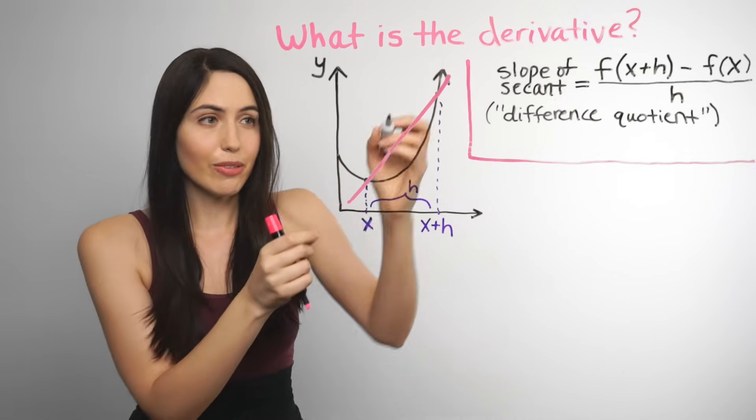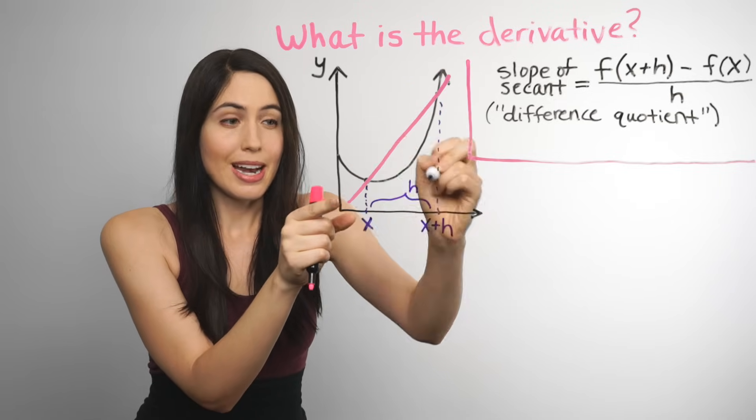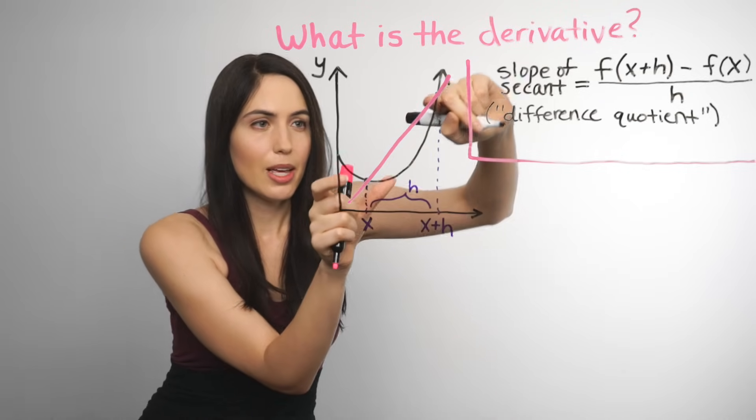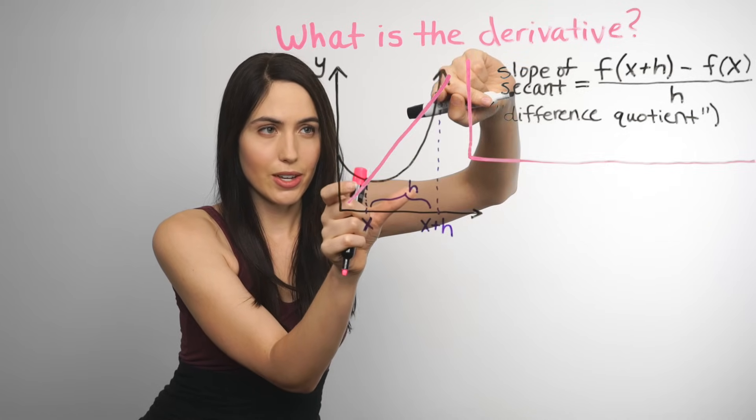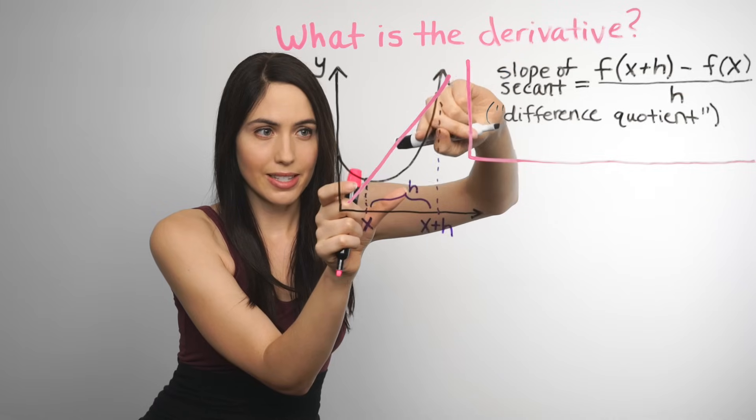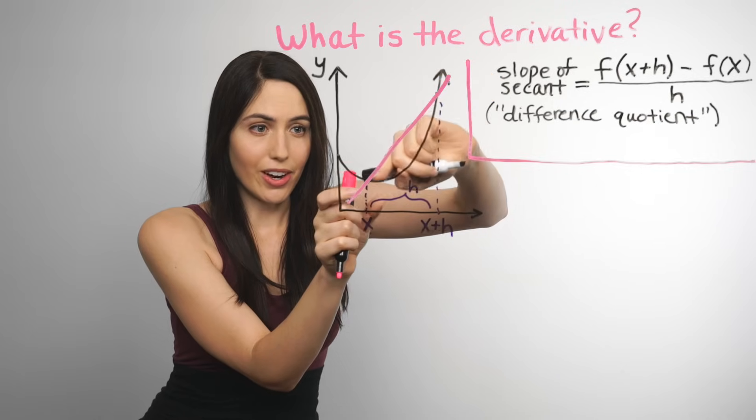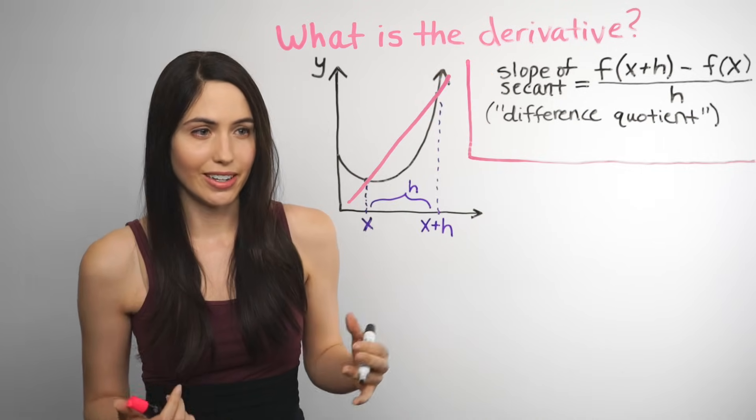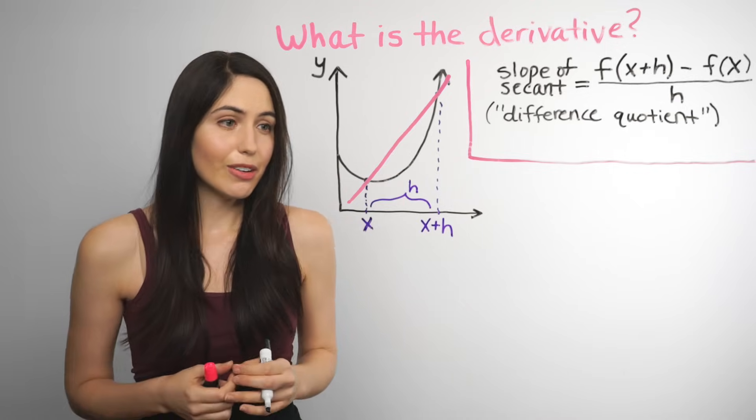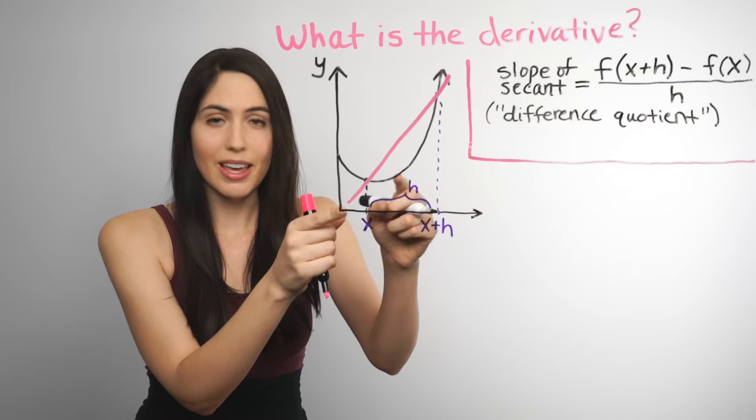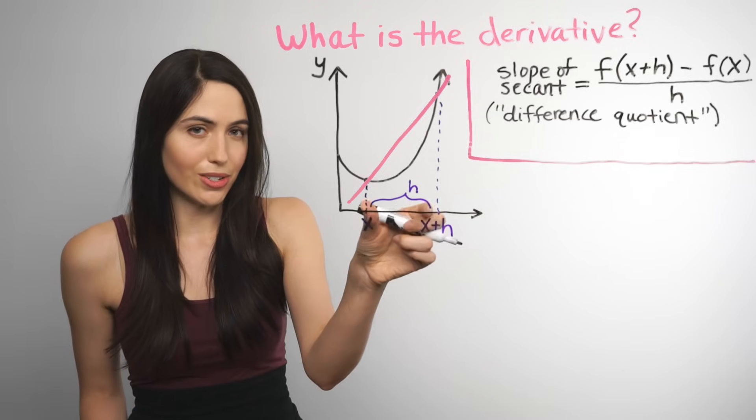We can make it exact if we close in on x, by narrowing h to 0, and picking a right point that is closer and closer to the left, so that the horizontal distance gets smaller and smaller. And the closer those two points are together, the more accurate our estimate is for the slope at that point. And we can make it perfect if we make h so small, make h infinitely smaller, by taking the limit as h approaches 0.